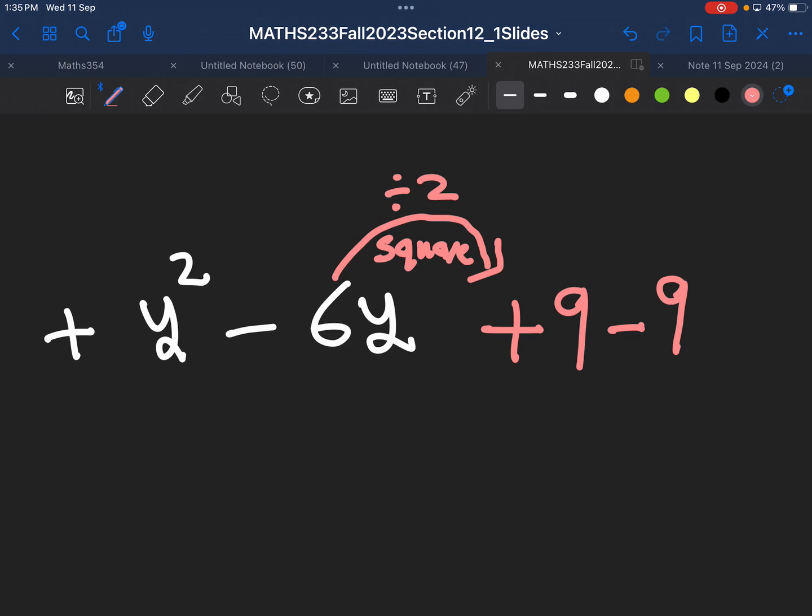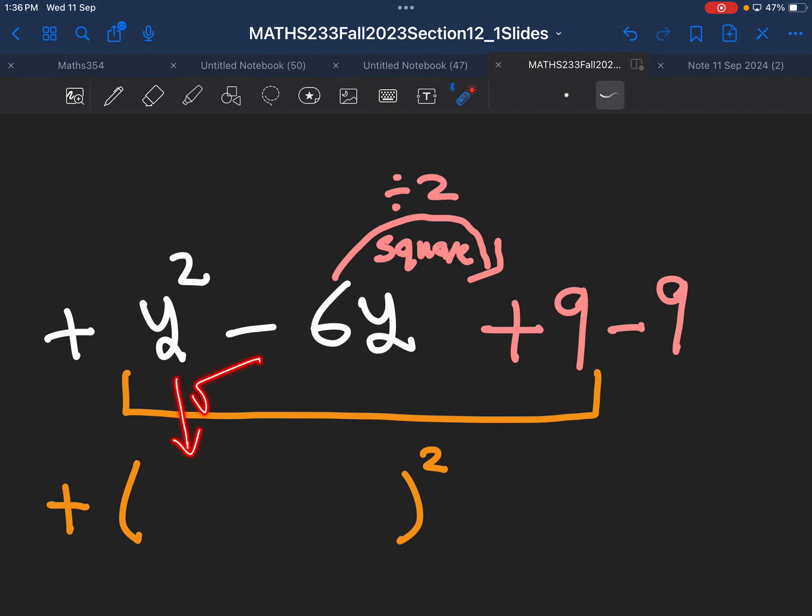And now the same thing, same scenario from the beginning to the end. The first three terms, you need to deal with them. They will give you a complete square. So this will be something square. What is inside this square? Again, y square, we take the square root. 9, we take the square root. So y square, take the square root. This is y. And then the 9 will give me just 3.